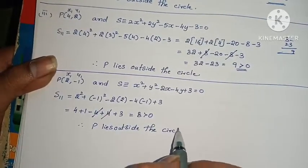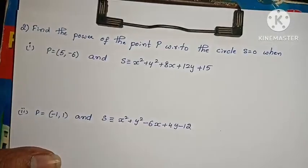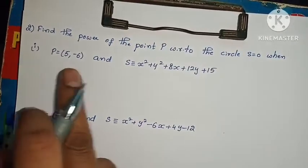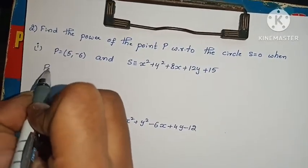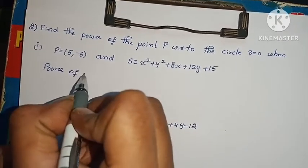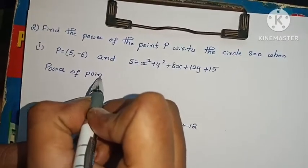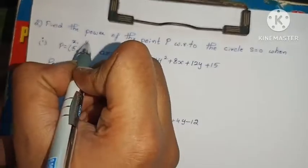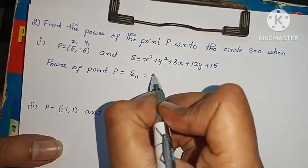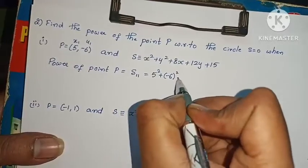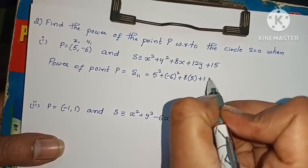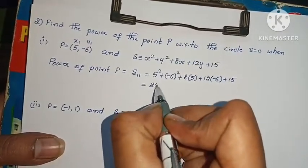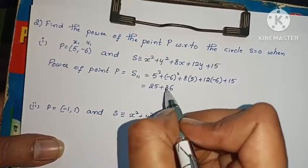Next problem: find the power of the point P with respect to circle S equals 0, when P equals (5, minus 6) and S equals x squared plus y squared plus 8x plus 12y plus 15. Power of point P = S11. Substituting x1=5, y1=minus 6: 5 squared plus 6 squared plus 8 into 5 plus 12 into minus 6 plus 15 = 25 plus 36 plus 40 minus 72 plus 15.